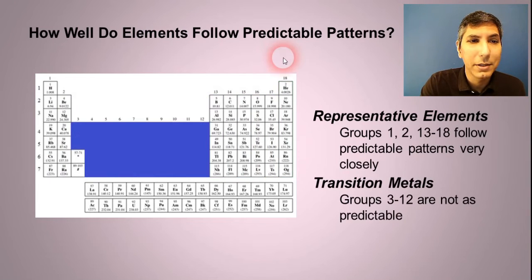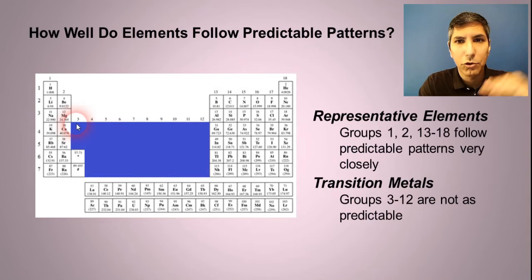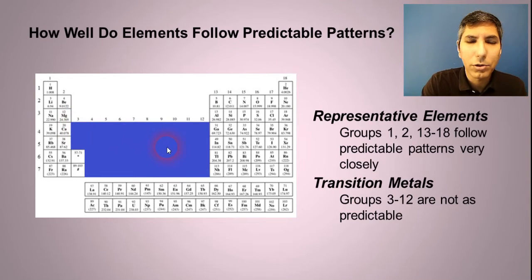Now there are these elements in the middle, the ones that kind of look like they've been pushed down, groups 3 through 12. Those are called the transition metals or transition elements sometimes. Those have properties that aren't quite as predictable. They're not as reactive, generally speaking. They are usually very durable. They normally have a fairly high melting point. We use those in building things like iron and copper and titanium.